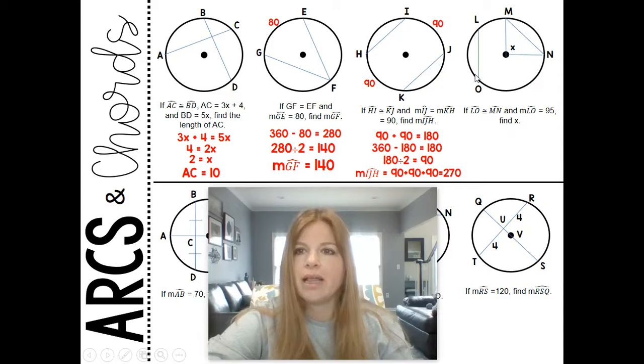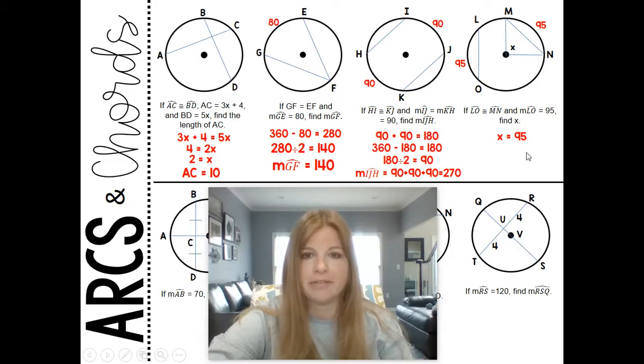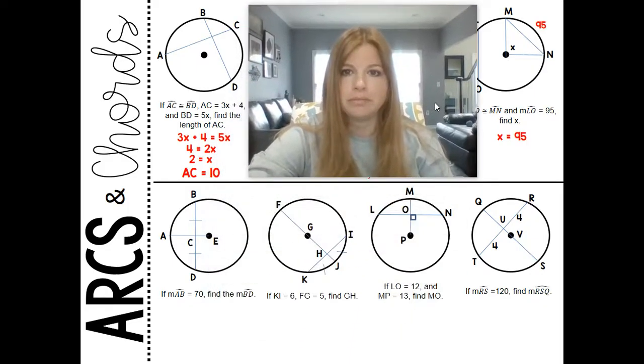Last one: if arc LO is congruent to arc MN, so these arcs are congruent to each other, which means those chords are congruent to each other, and the measure of arc LO is 95, find X. Okay, so if LO is 95, and LO is congruent to MN, then this arc MN would also have to be 95, and the central angle that goes along with MN would need to be the same. So if that's 95, and then that's 95, then my central angle is also 95.